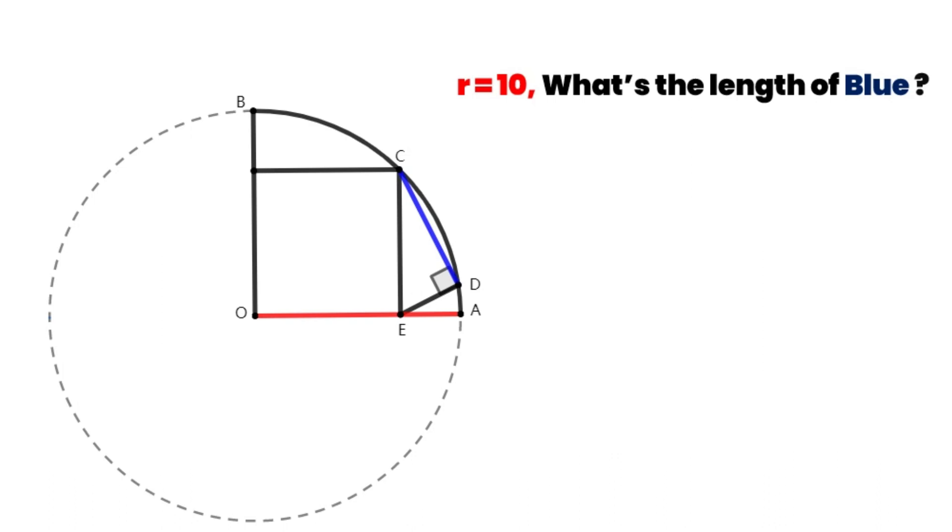Through point C and center O, we get the diameter CF. Then connect DF.